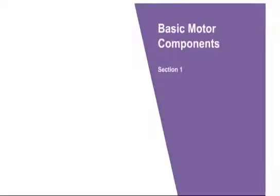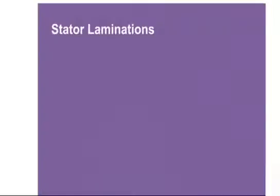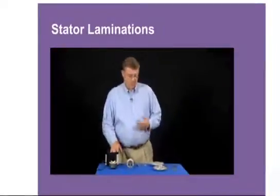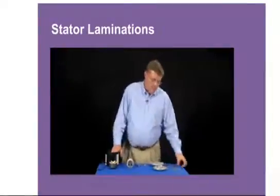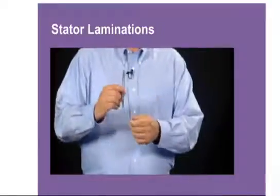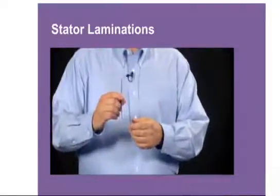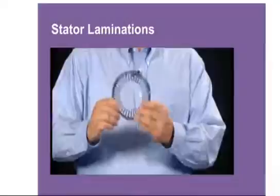In this first section, you'll learn about the various components that work together to make a motor. The first thing I always talk about when talking about electric motors are the stator laminations. These are thin, magnetic-grade steel sheets that are stacked together to form the stator core.